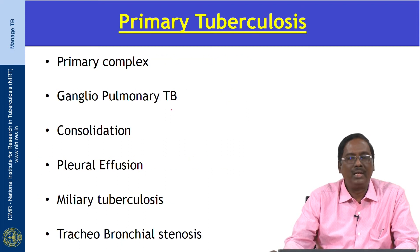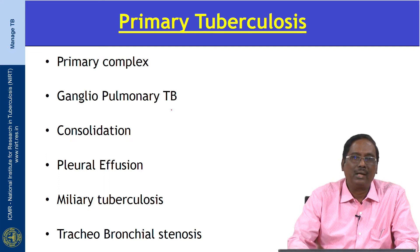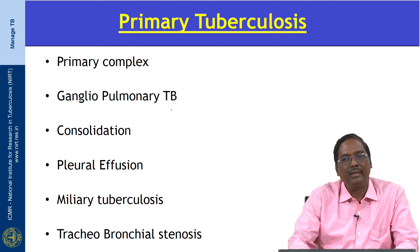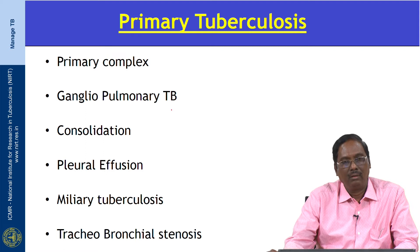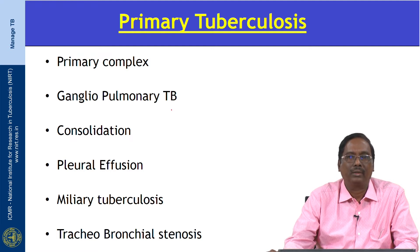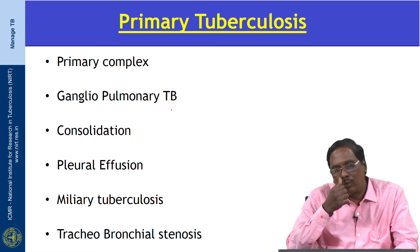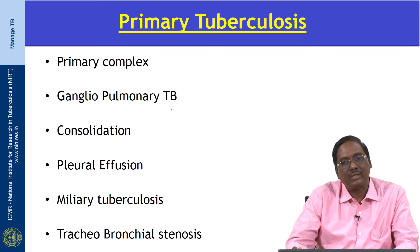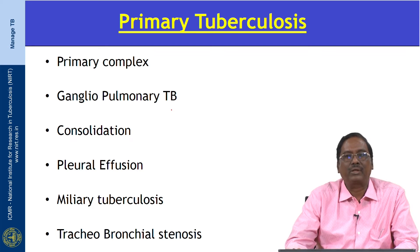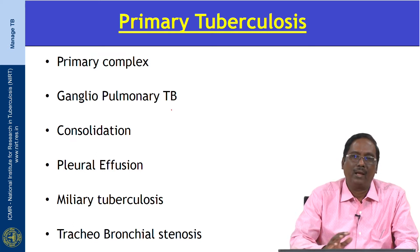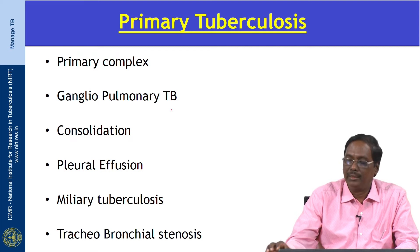Primary TB commonly affects children and adolescents, though it is increasingly encountered in adults. Generally, primary TB is self-limiting and not symptomatic. Classically, six entities have been described in primary tuberculosis. The first two — the primary complex and ganglionic pulmonary TB — are characteristic of primary TB. The rest — consolidation, pleural effusion, miliary tuberculosis, and tracheobronchial stenosis — are shared by both primary and post-primary tuberculosis.